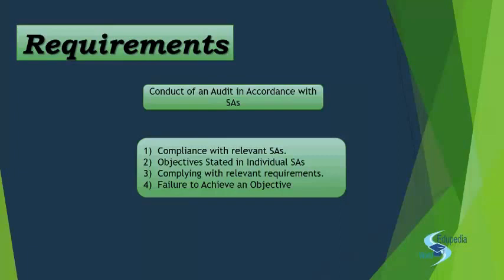All the relevant SAs which are required to be applied by that company have to be complied with — that is the purpose of compliance with relevant SAs. Next is objectives stated in individual SAs. You have an overall objective while performing your audit — to give a fair opinion. But that overall objective can't be reached unless you break it down into smaller objectives and meet them. So for each applicable SA that has its individual objective, if you try and meet all the objectives of various SAs, ultimately your final objective is met.